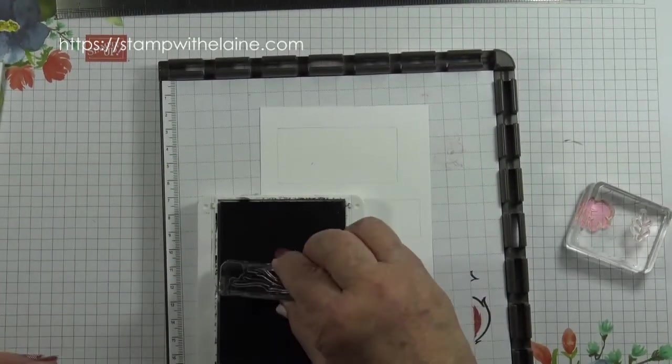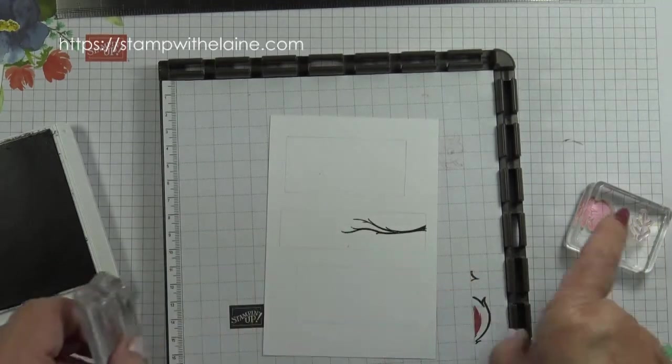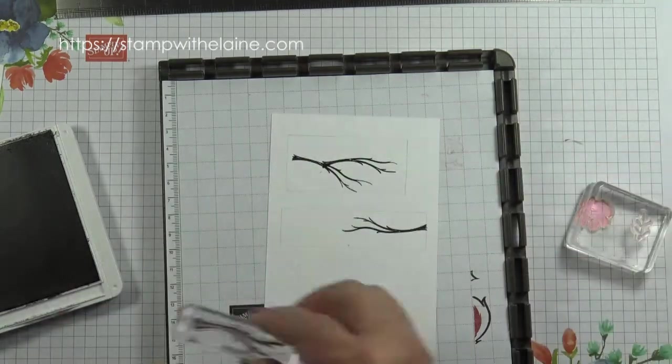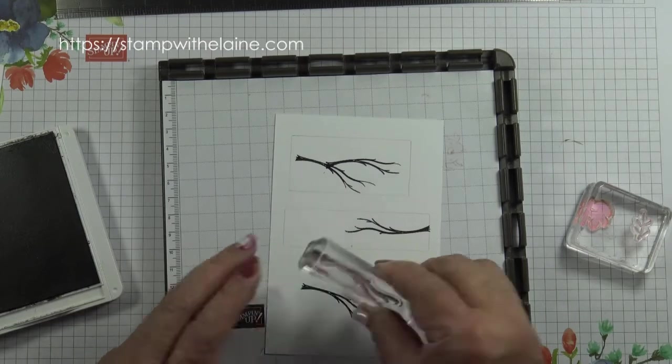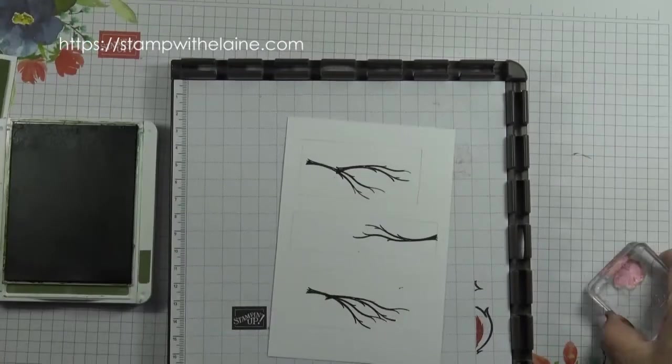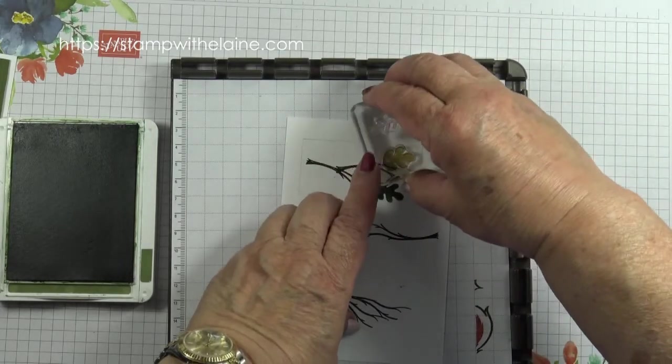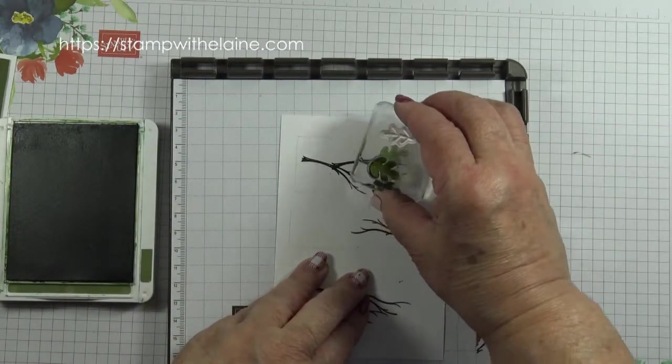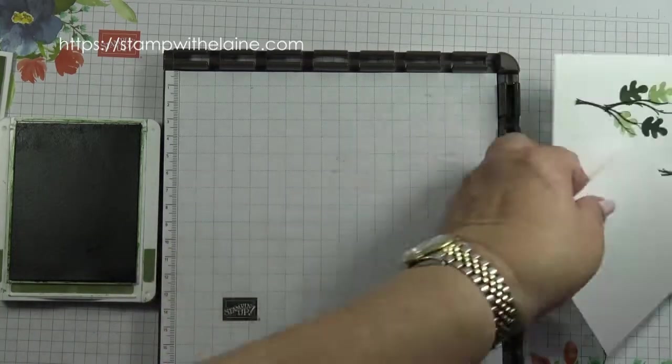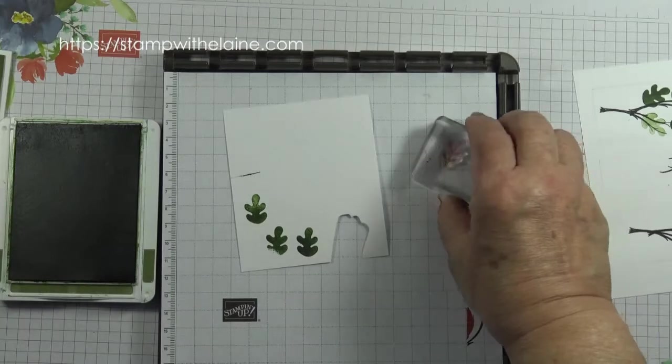We've got a bit more stamping to do. So I'm going to stamp a branch here to the left and this one to the right. So now we want to stamp the leaves so I'm going to stamp some directly and then some in this second generation so that there's a variation of colour. And I'm going to stamp some on a scrap piece of paper and then fussy cut those out.